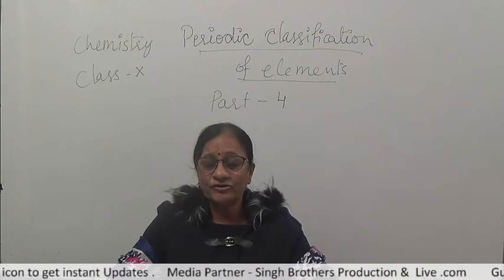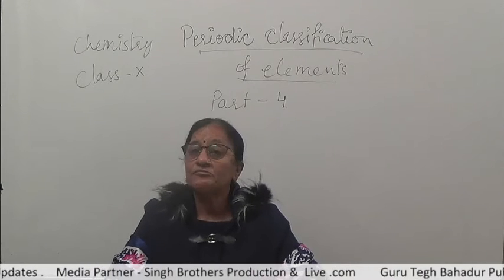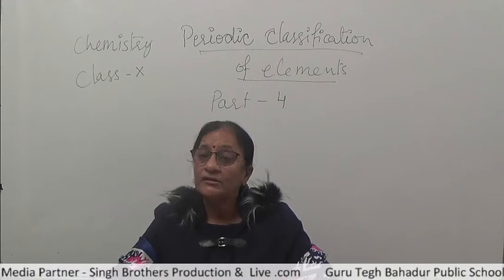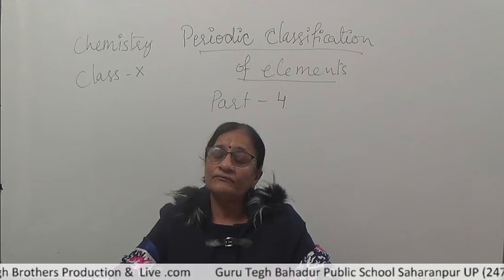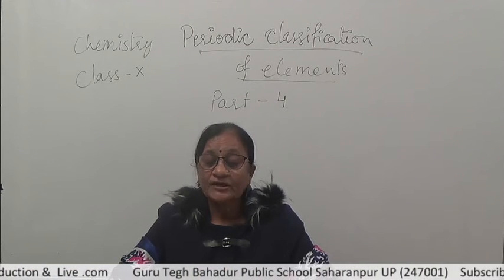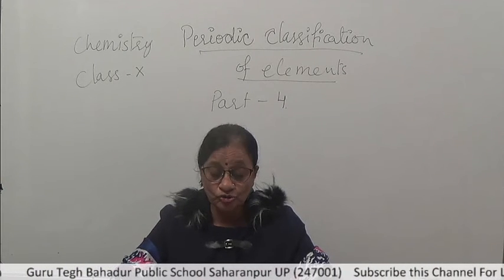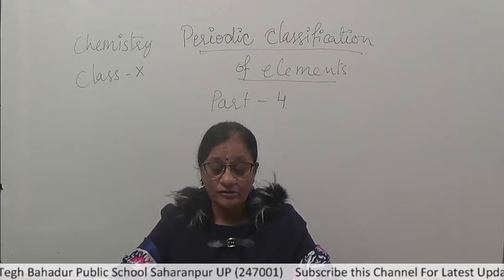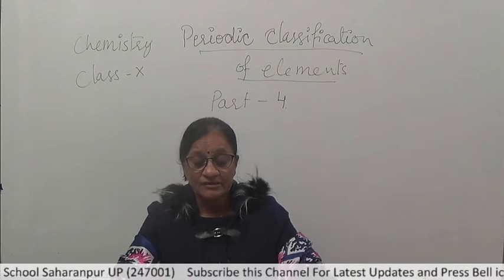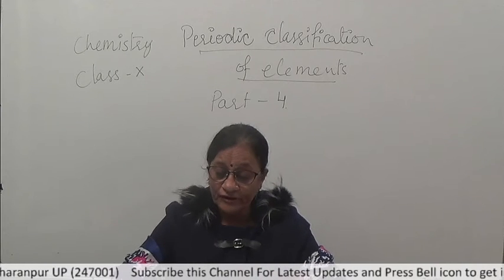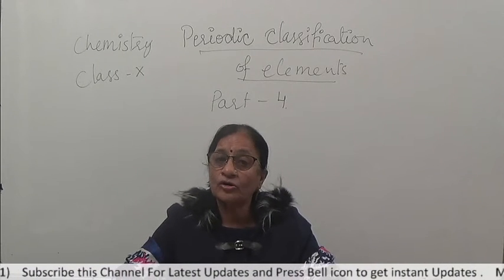In place of atomic mass, atomic number was made the base of the modern periodic table. Now we will talk about the modern periodic table. It is the systematic arrangement of elements into groups and periods on the basis of similarity in chemical properties and in order of their increasing atomic number. This is the modern periodic table.